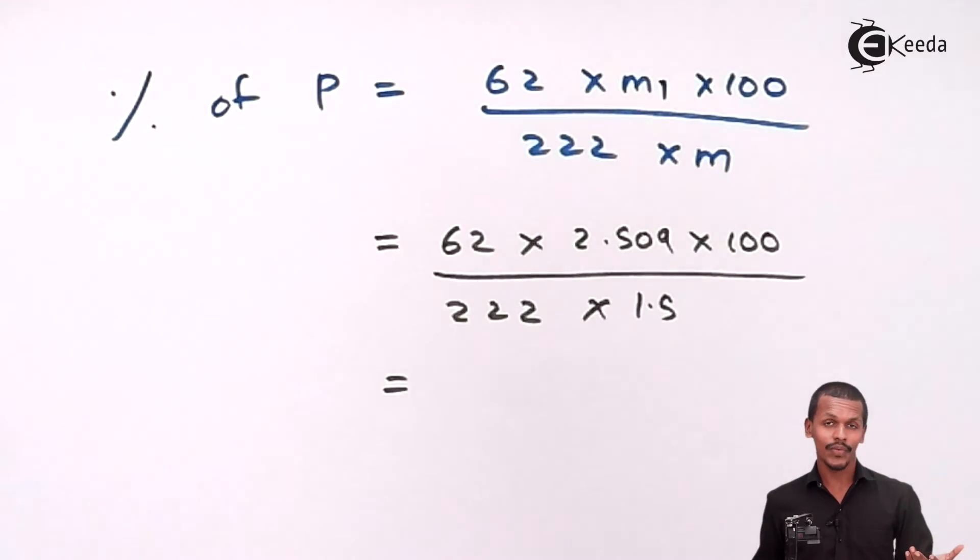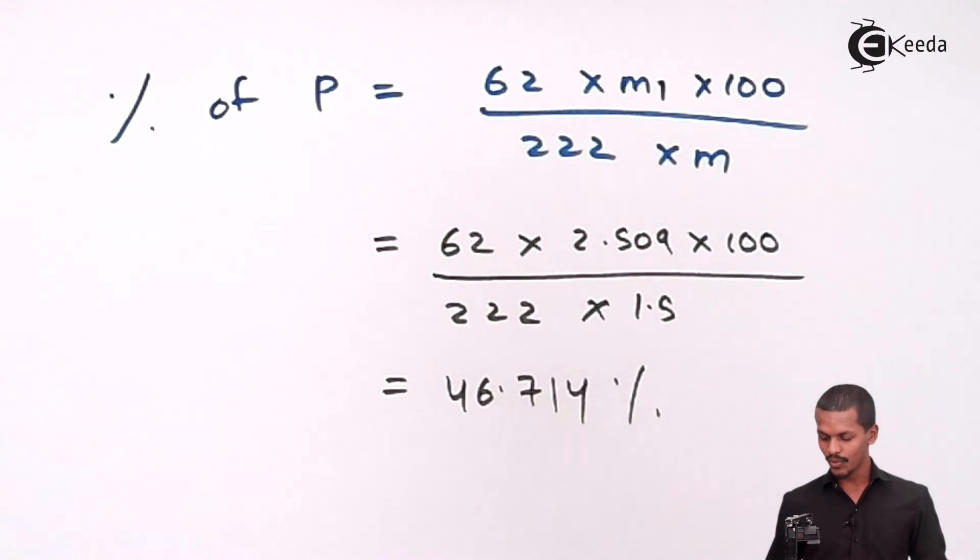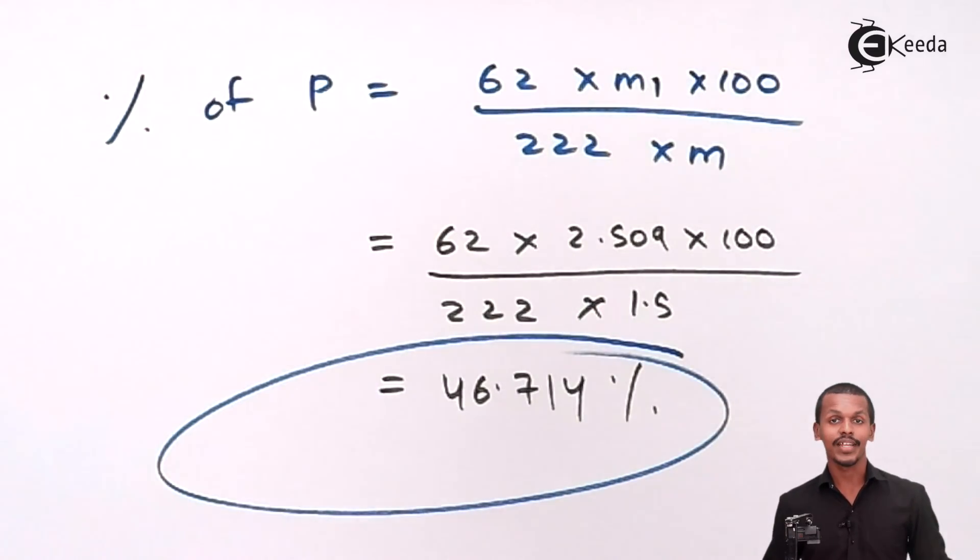After calculation, we get a percentage of 46.714%, which is the amount of phosphorus present in the organic compound.